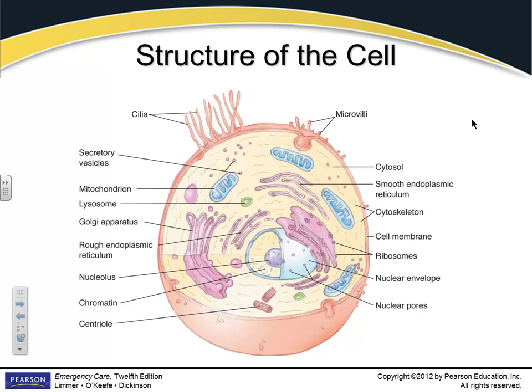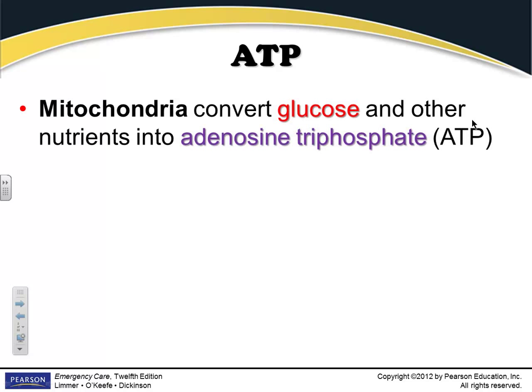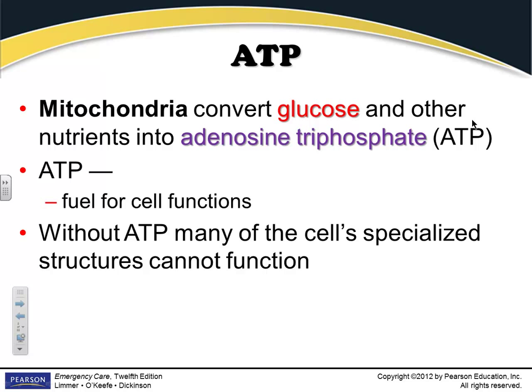Sepsis is a widespread infection in the body, and a lot of things go on as a result of that. ATP — adenosine triphosphate — is the energy actually created by the cell. The mitochondria convert glucose and other substrates into ATP. That's energy. One of the medications we give at the upper levels is adenosine, given for people with an interesting cardiac rhythm.